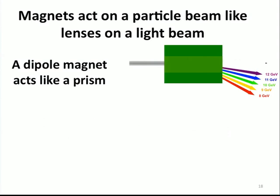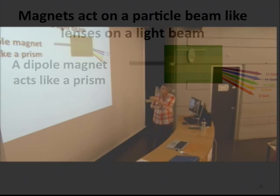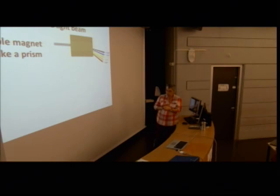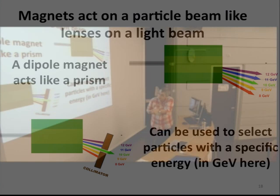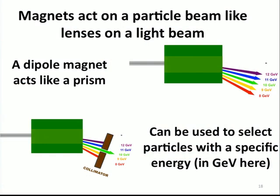Depending on the energies, they all come out at different angles. You could put a collimator, just a slit, to select one particular energy you want to work with. This corresponds to a particular energy and particle type. We measure the energy in GeV, units of giga electron volts. You can select what kind of particles you want from your beam.